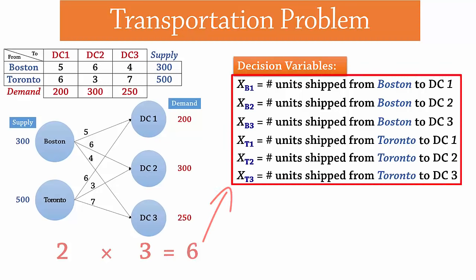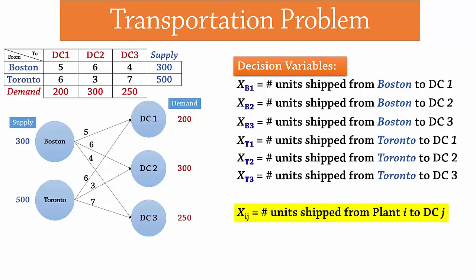Now, suppose I don't like listing every single variable, or maybe I just happen to have too many variables. Then I can use the short form as follows. Let XIJ equal the number of units shipped from plant I to DCJ, where I equals B for Boston and T for Toronto, and J equals 1, 2, 3 for DC1, DC2, and DC3 respectively.